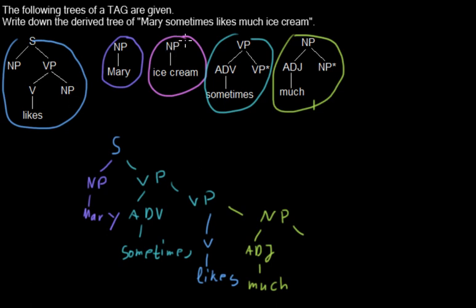And this node that just replaced that node. This node will be replaced by this node. So we have here NP, and below this NP there is ice cream.